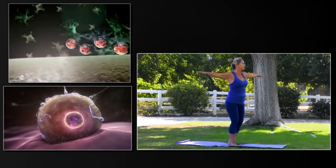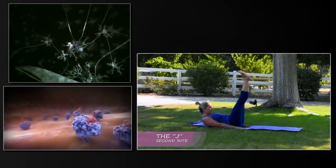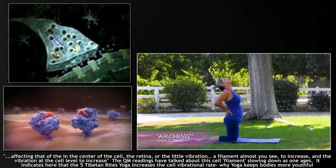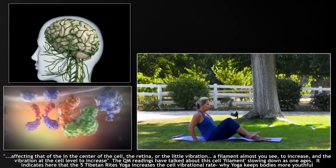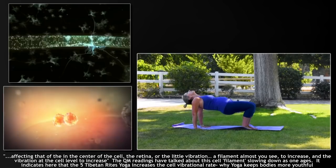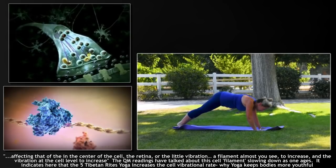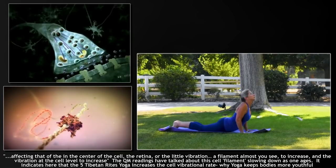However, it is affecting the cells in the body, the very electrons at the cell level, affecting that of the center of the cell, a little retina, or a little vibration, a filament, almost, to increase the vibration at the cell level. Which, if the cells were in complete harmony, at their proper vibration all the time, the body would maintain perfect health and would not age, or certainly would not age quickly.